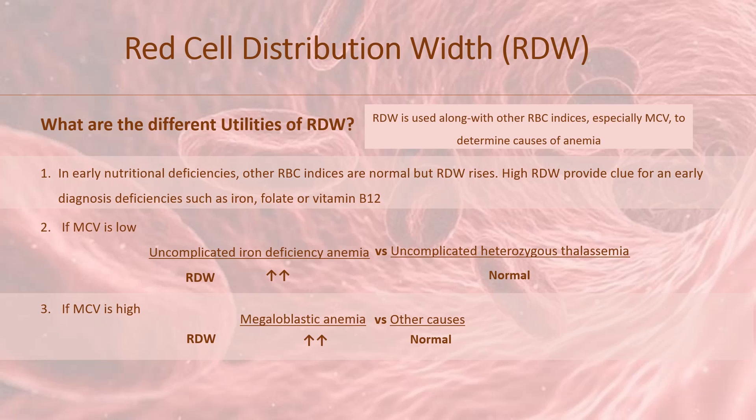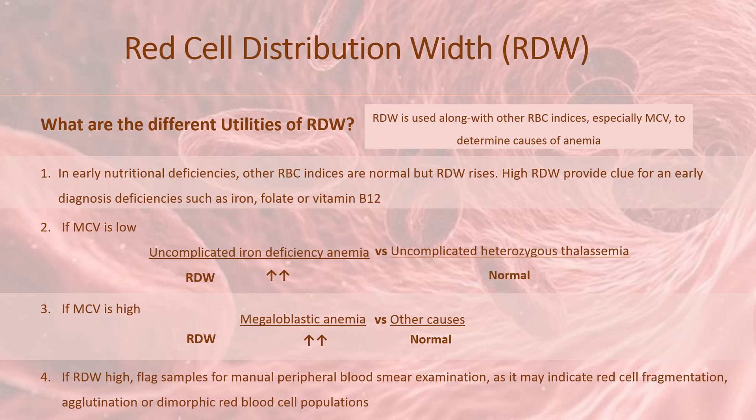There is a useful utility of RDW for the laboratory staff as well. It can be used as a guidance to flag samples which need manual peripheral blood smear examination, since elevated RDW may indicate red cell fragmentation, agglutination, or dimorphic red blood cell populations.